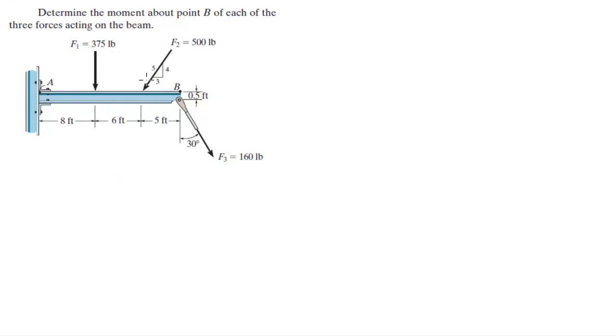The first thing you need to do is divide the forces into X and Y components. This is the Y component of F2 and this is the X component of F2. The Y component of F2 has a magnitude of 500 times 4 over 5, which is equal to 400 pounds. The X component we don't really care about since it's pulling directly away from B, therefore generating no moment.